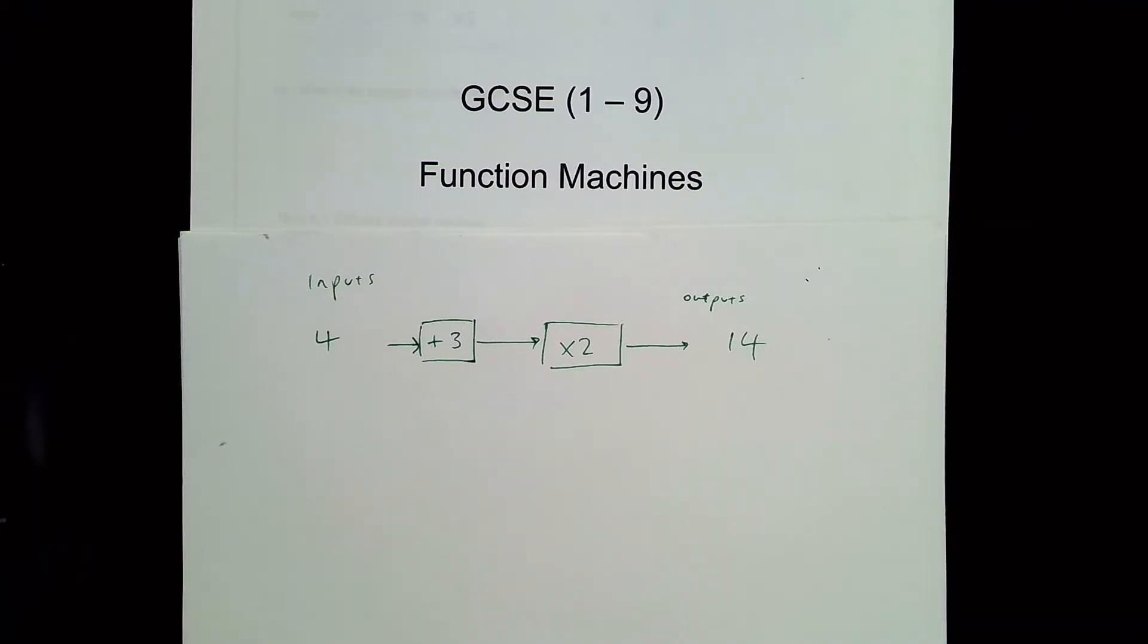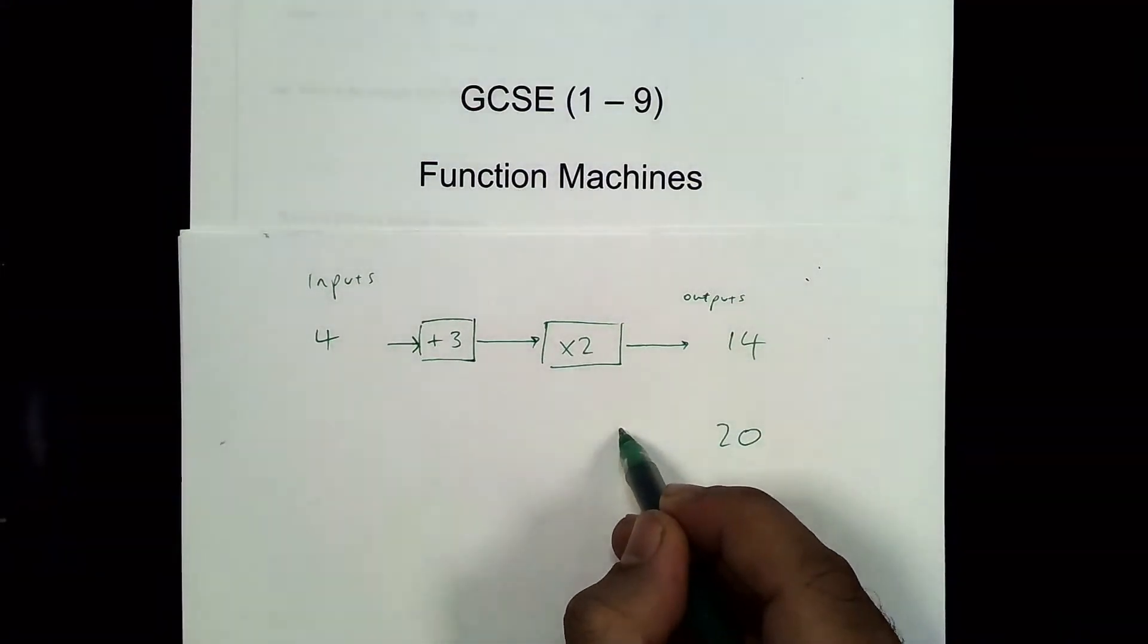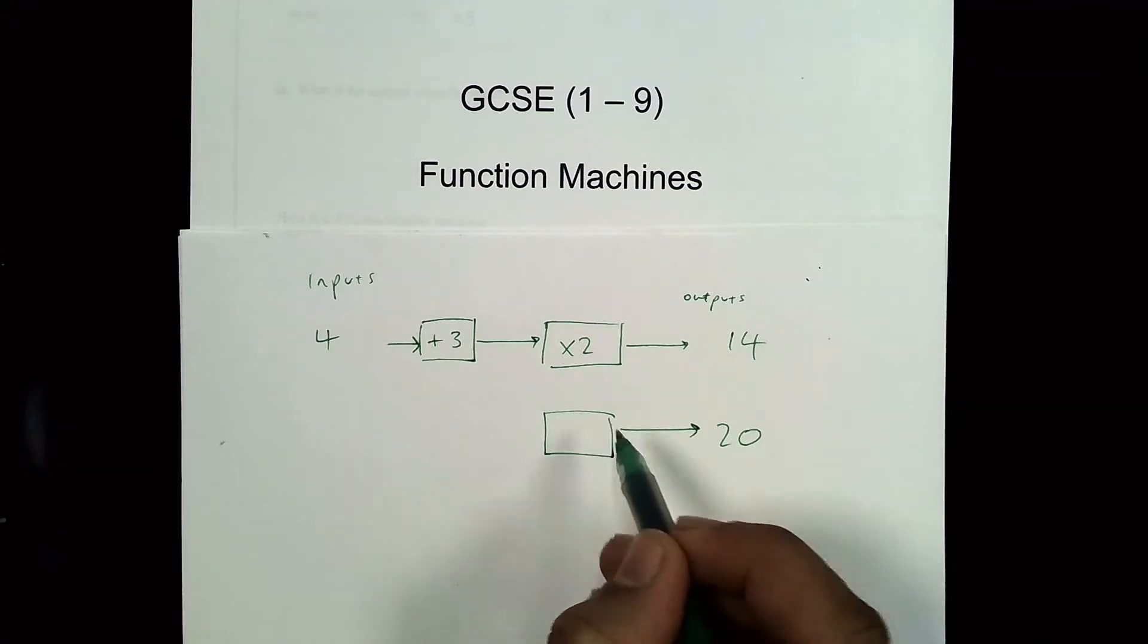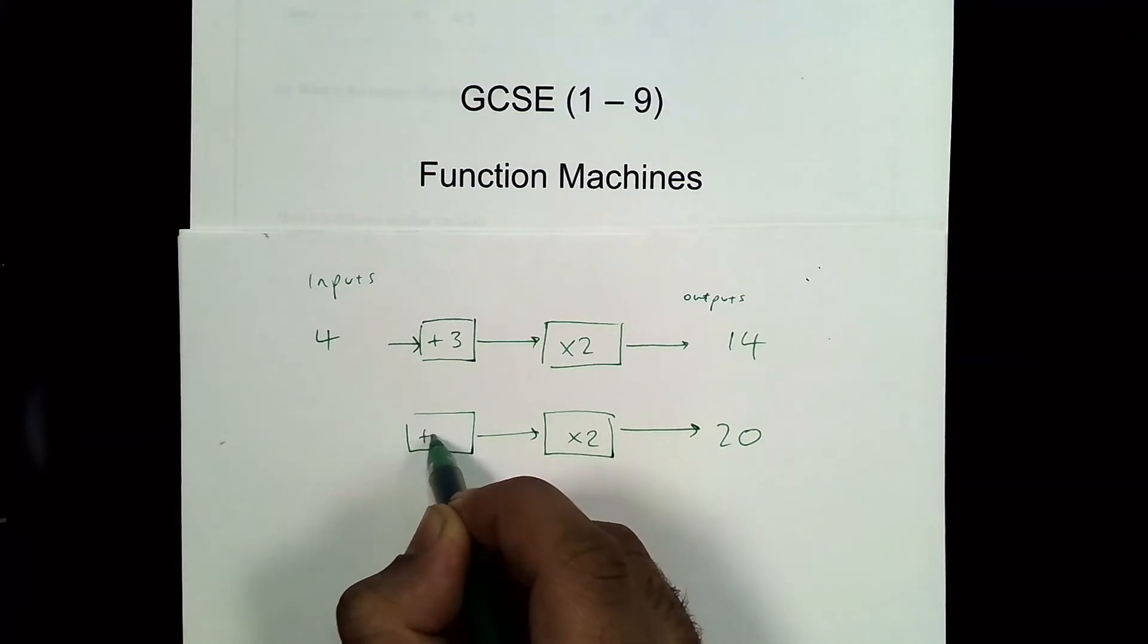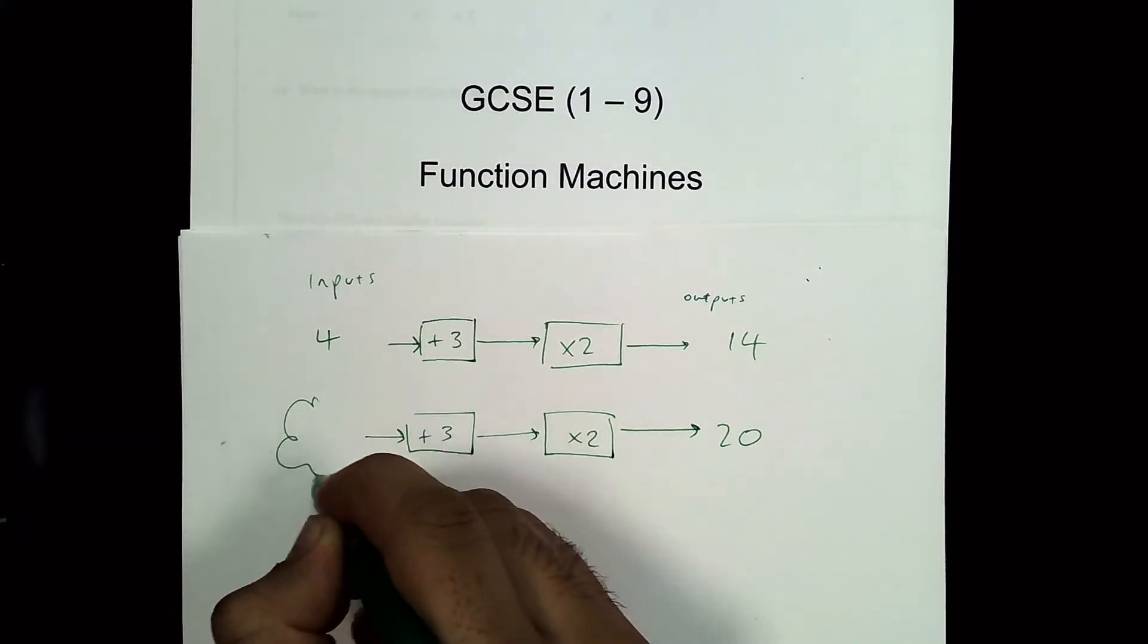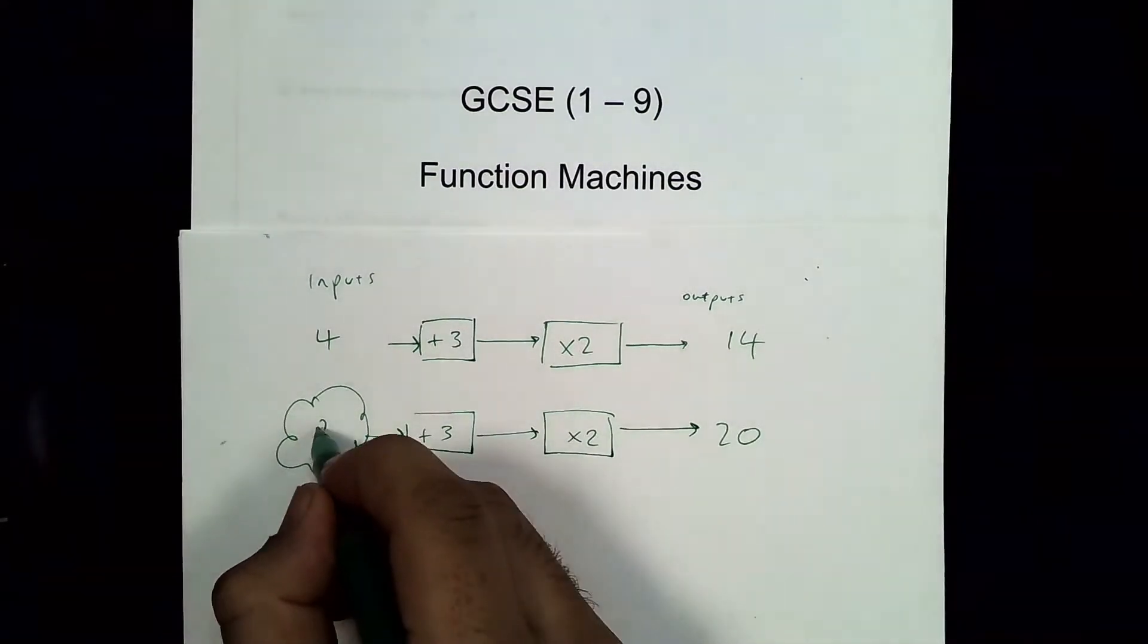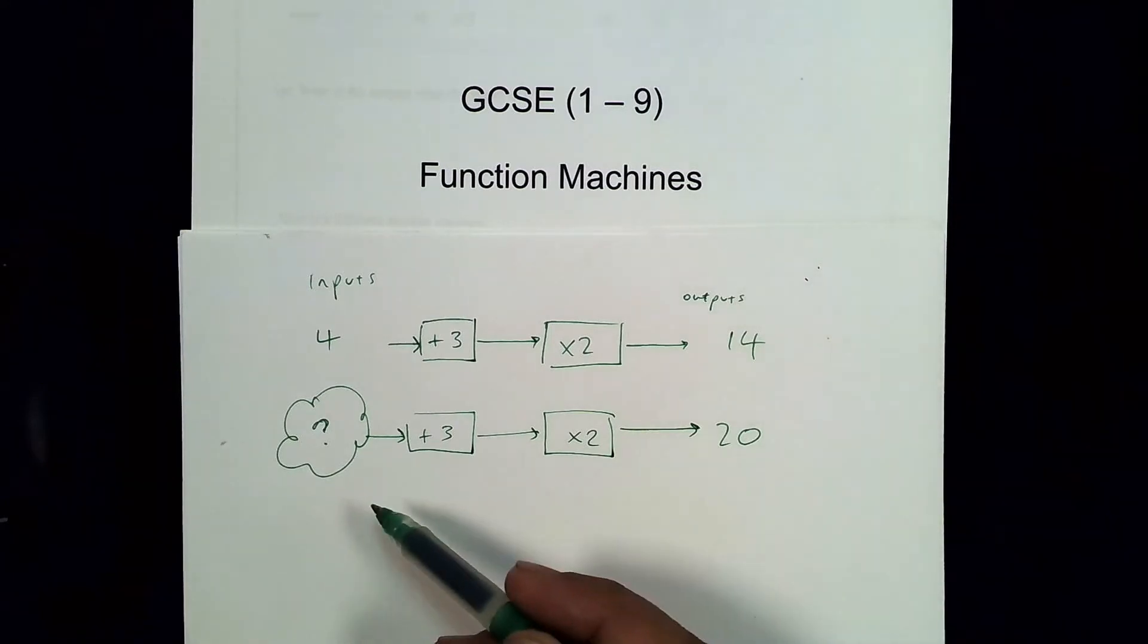Sometimes they might give you an output and ask you to work backwards to find the input. For example, I might say twenty. Twenty has come out of the machine. Now if you're going backwards, so this is the same function machine, but now the question is, if I put a bubble here, what goes in this bubble if I went backwards? So going backwards, rather than times by two and adding three, you do the opposite.